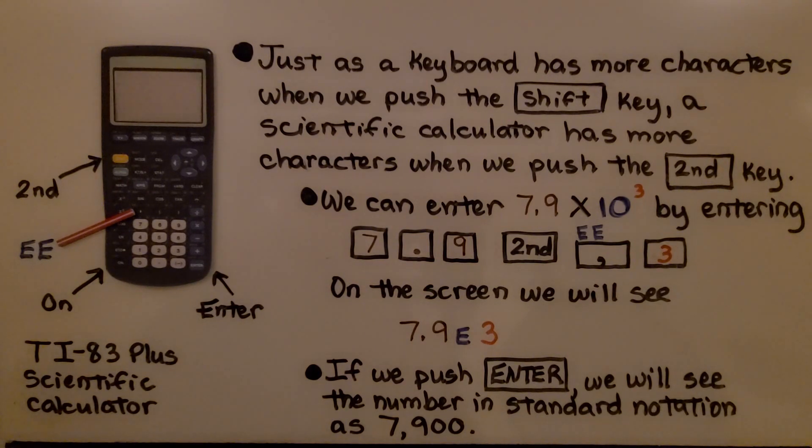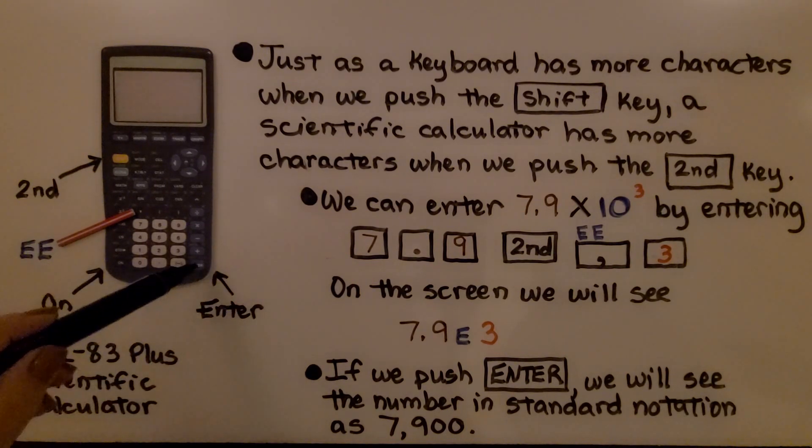A very typical classroom calculator is the Texas Instruments TI-83 Plus scientific calculator. If you look right here, there's a yellow key—that's the second key. And if you look right here, there's a comma on this key, but above it there's an EE. Here's our on key. Here's our enter key.